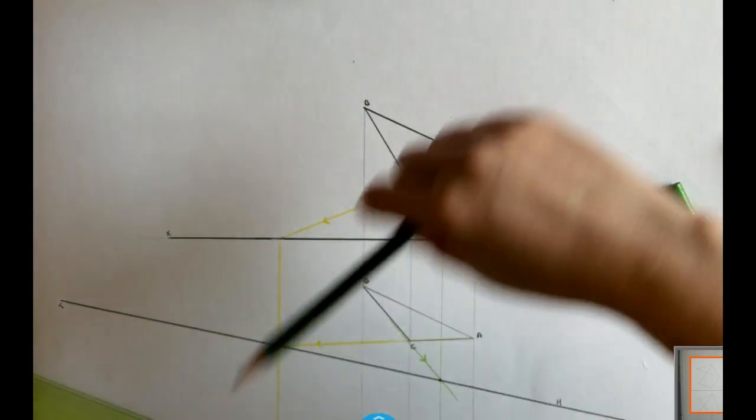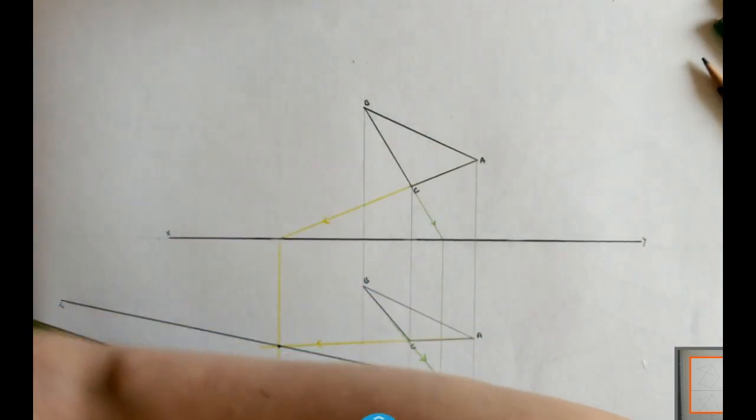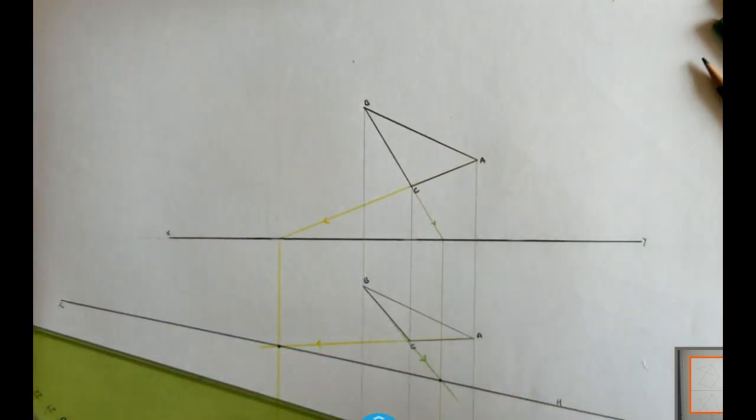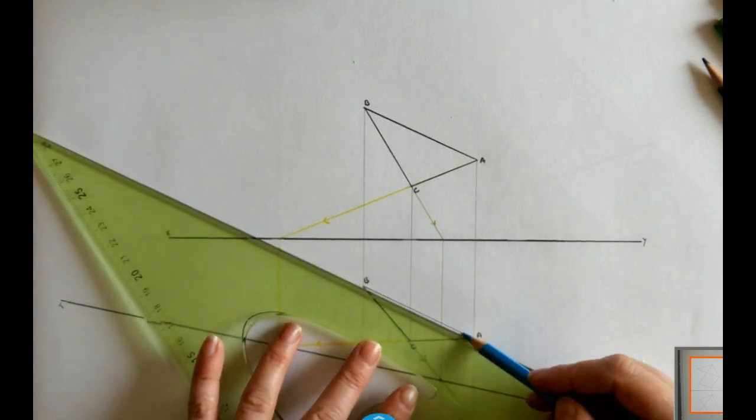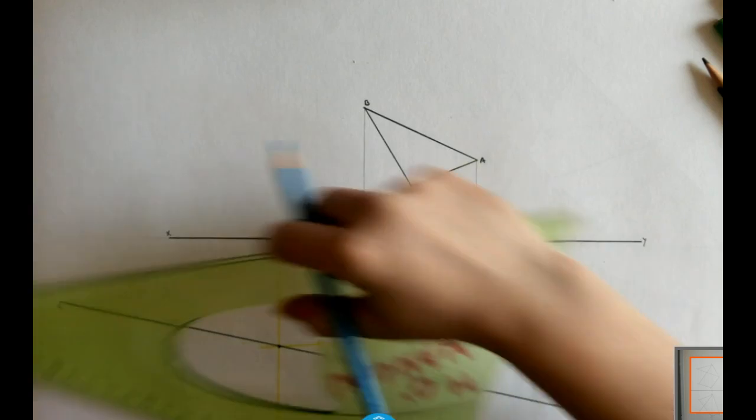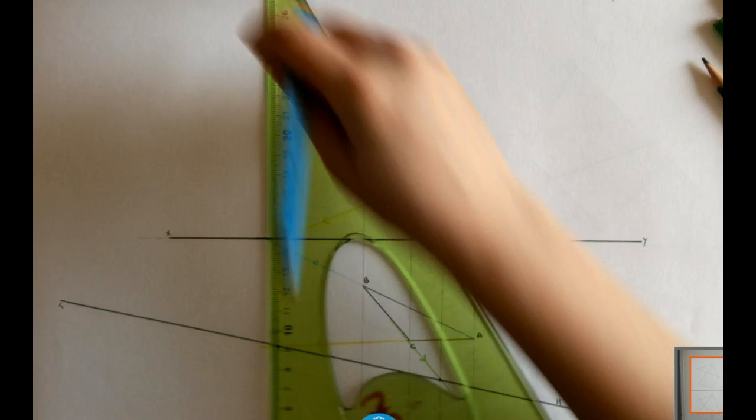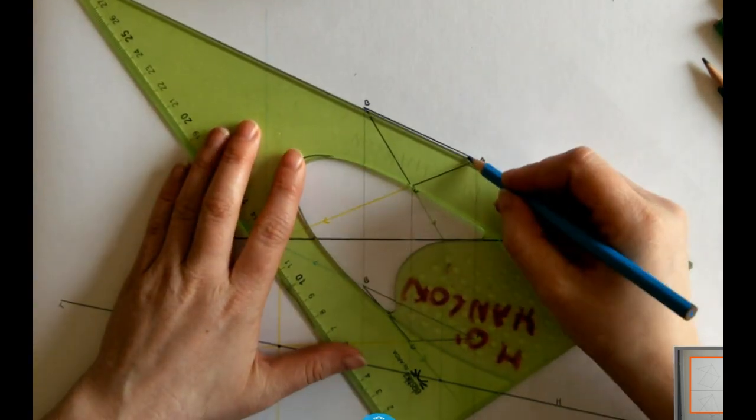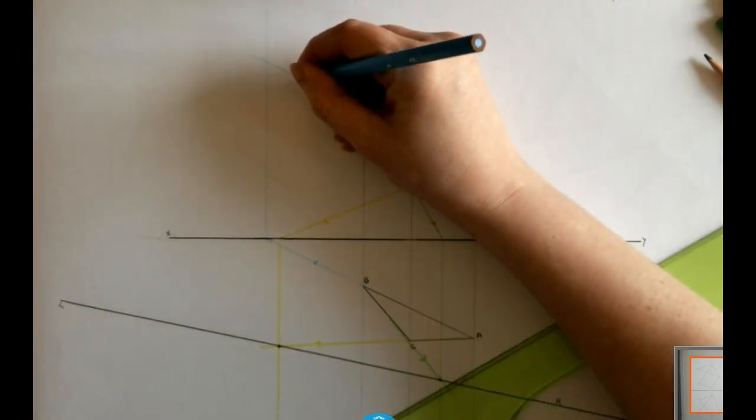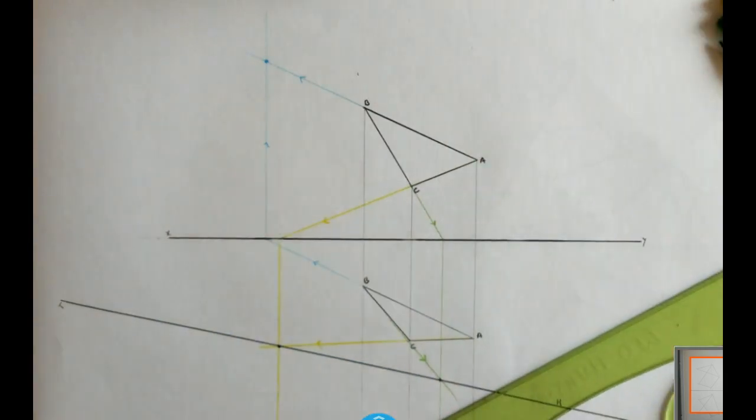I need to do the exact opposite now in order to find my vertical trace. So I'm going to use two different colors again. So I'm going to extend BA. And where BA hit the XY line, I'm going to bring them up. BA is here. That's giving me a point on my vertical trace.